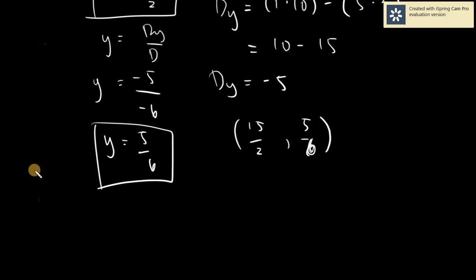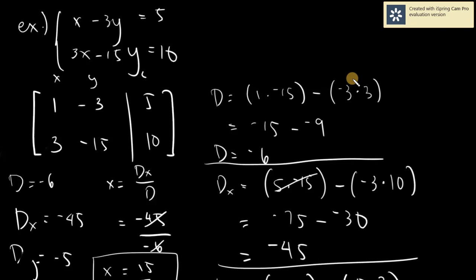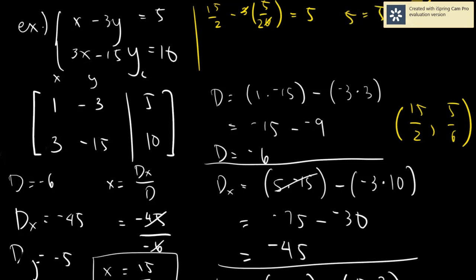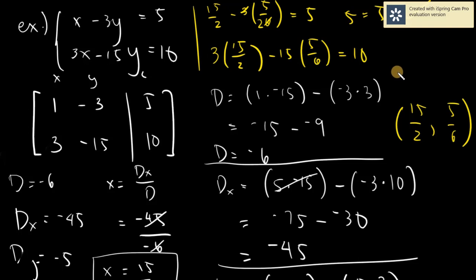Let's do the checking. For the first equation: 15 over 2 minus 3 times 5 over 6 equals 5. That's 15 over 2 minus 5 over 2, which is 10 over 2, equals 5. Correct. For the second equation: 3 times 15 over 2 minus 15 times 5 over 6 equals 10. Using a calculator, the answer is 10 equals 10. Correct.